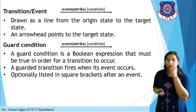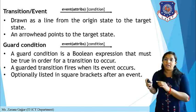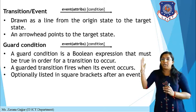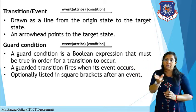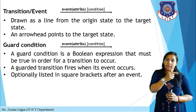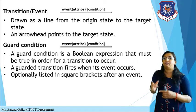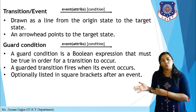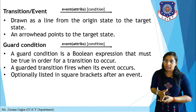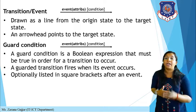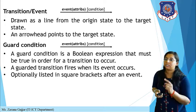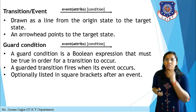The next component is a transition or an event. It is drawn as a line from the origin state to the target state — for example from unpaid to paid, as a simple arrow line pointing to the target state. Similarly, a guard condition defines a condition beside the event. A guard condition is a Boolean expression that must be true in order for a transition to occur. A guard transition fires when its event occurs and is optionally listed in square brackets after an event, as shown in the image.